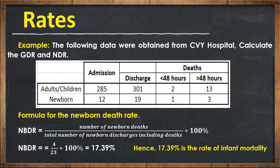The same NDR formula is applied when calculating the newborn death rate. NDR equals the number of newborn deaths — which is 1 plus 3, equaling 4 — divided by the total number of newborn discharges including deaths, which is 19 plus 1 plus 3, equaling 23. So 4 over 23 times 100 gives 17.39%. Hence, 17.39% is the rate of infant mortality.